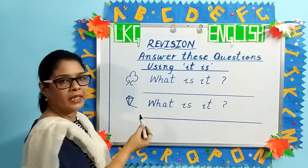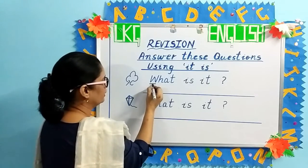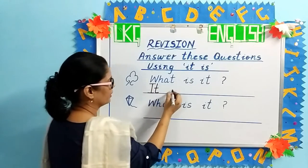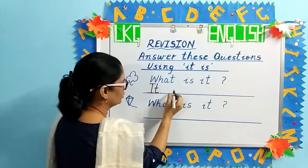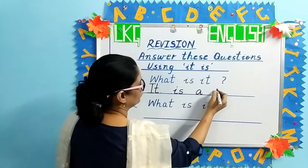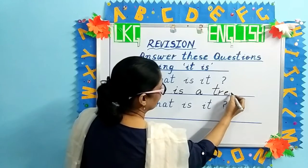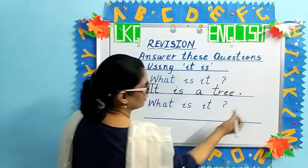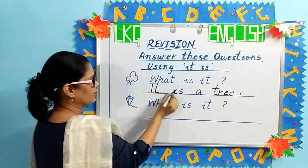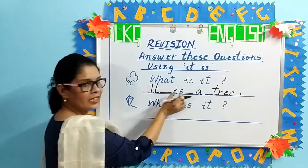You will always begin your sentence with a capital letter. Capital I, small t — 'it' — leave one finger space. 'Is' — is a tree. T, R, E, E — tree — and put a full stop at the end of the sentence. Please leave enough space between each word.